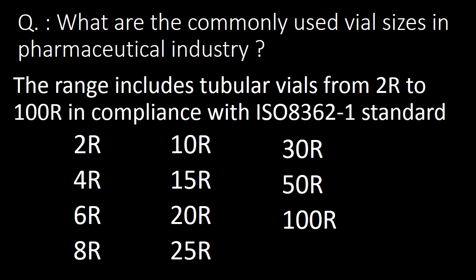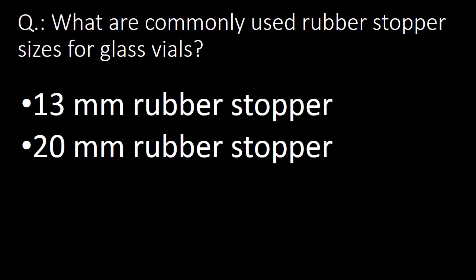Next question: what are the commonly used vial sizes in the pharmaceutical industry? The range includes tubular glass vials from 2R to 100R in compliance with ISO 8362-1 standards. The commonly used vial sizes are 2R, 4R, 6R, 8R, 10R, 15R, 20R, 25R, 30R, 50R, and 100R.